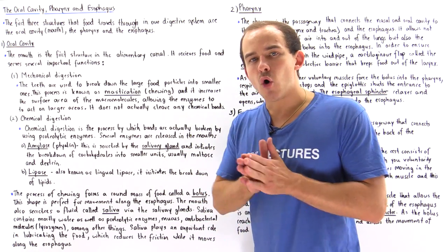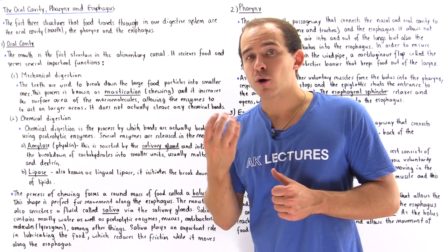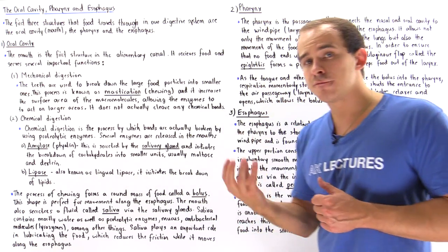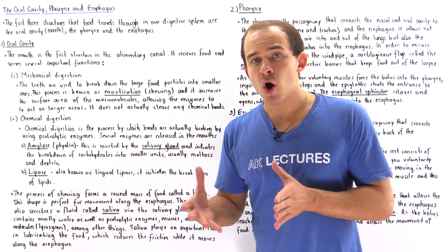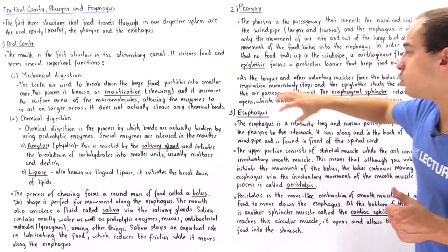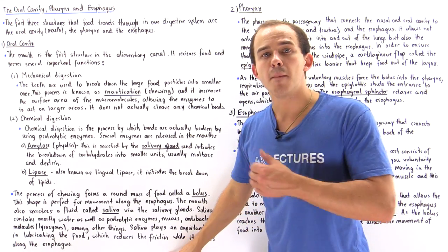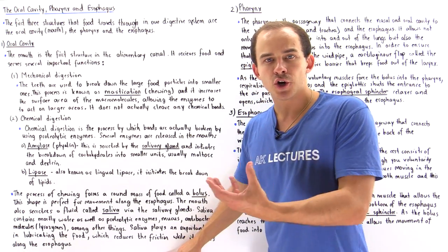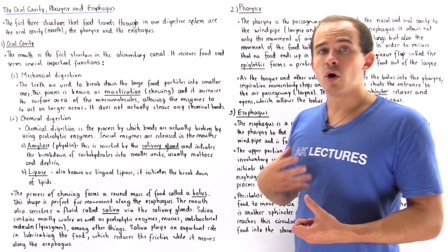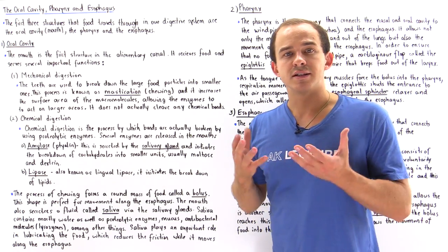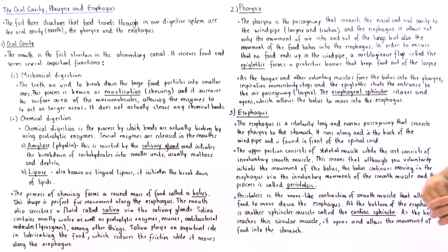Saliva also lubricates our bolus and food, which allows the movement of the bolus along our esophagus with a minimal amount of friction, ensuring that the movement of the bolus along the esophagus doesn't actually hurt or cause pain.